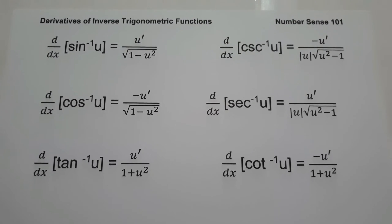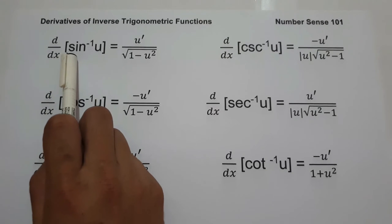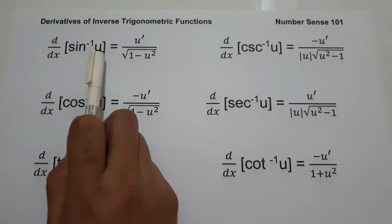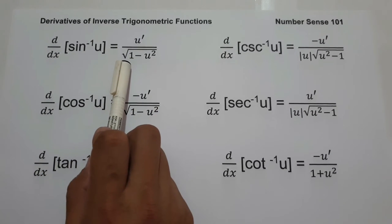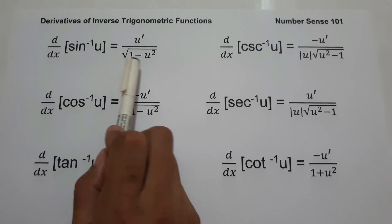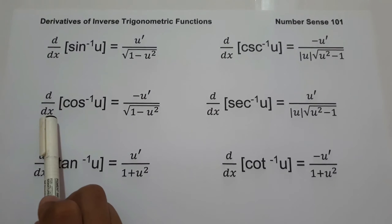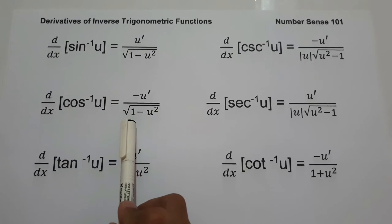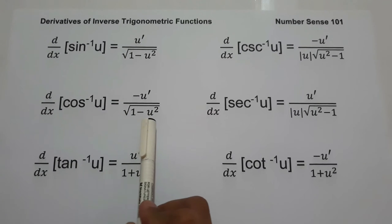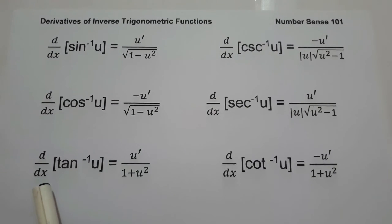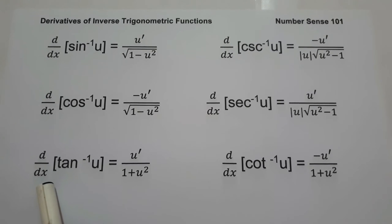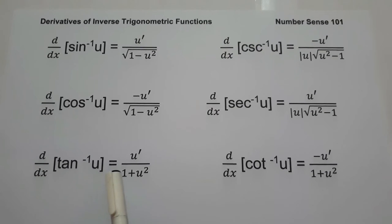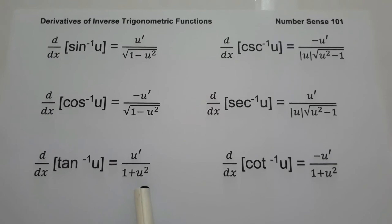The first one: the derivative of arcsin u is equal to u prime over the square root of 1 minus u squared. The second one is the derivative of arccos u is equal to negative u prime over the square root of 1 minus u squared. Next is the derivative of arctan u is equal to u prime over 1 plus u squared.